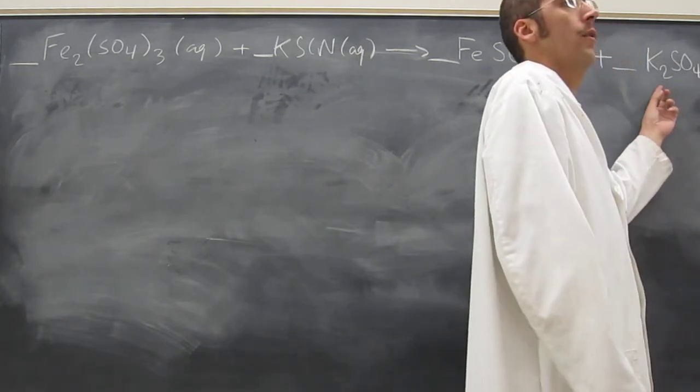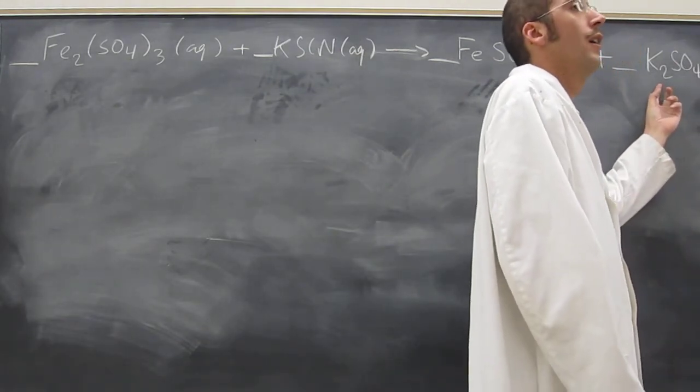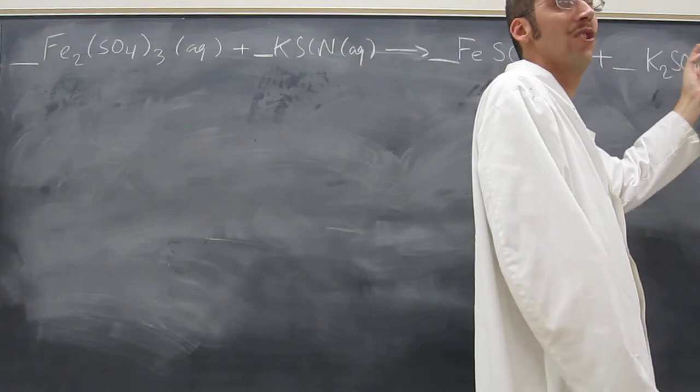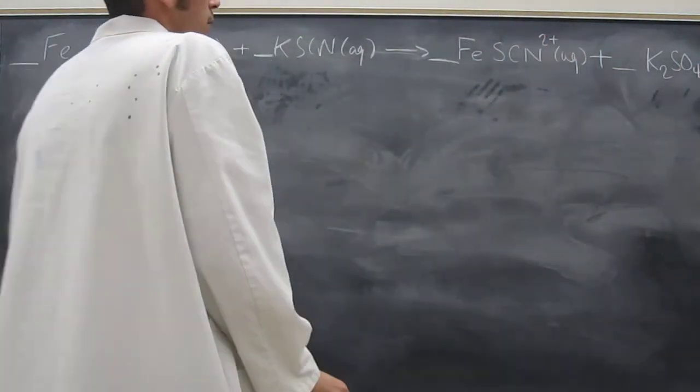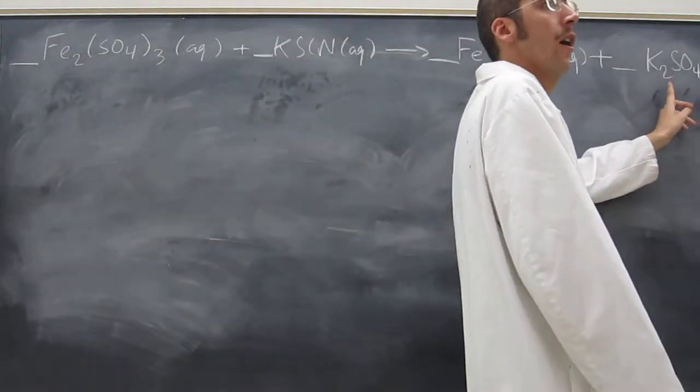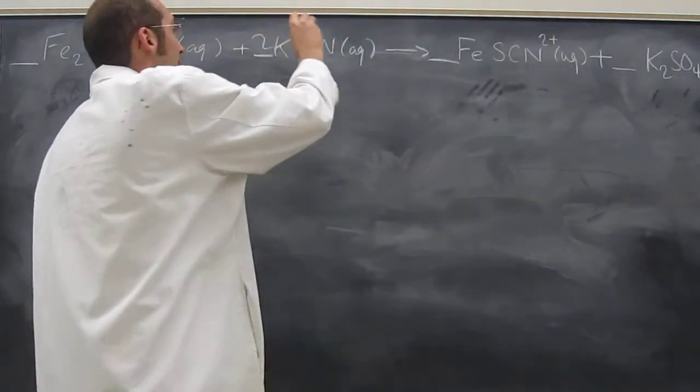So how did I know it was K2? Because sulfate is 2 minus, that's how I figured that out. But just already we know that there has to be that.